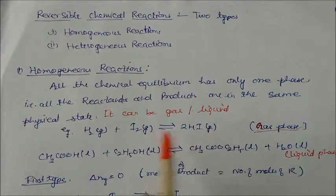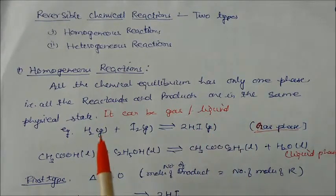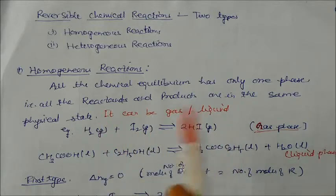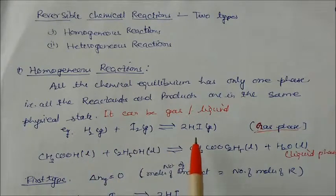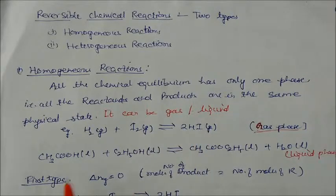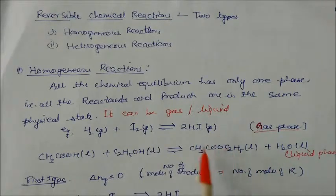It should be only one physical state. For example, when hydrogen reacts with iodine it is converted to hydrogen iodide. We can see the reactants are in gas phase and the product is also in gas phase, so this is a homogeneous reversible reaction. Similarly, acetic acid reacting with ethanol in aqueous state — the product is also in aqueous state, so they are in the same state.